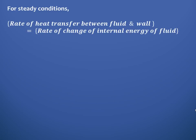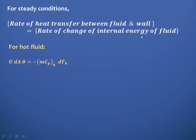For steady conditions, the rate of heat transfer between the fluids must equal the rate of change of internal energy. For the hot fluid, the heat transfer rate is given by U·dA·θ, where U is the overall heat transfer coefficient, dA is the elementary area, and θ is the temperature difference. This equals −mCp·dT_h for the hot fluid, where the negative sign indicates the hot fluid is losing heat. Therefore, dT_h = −U·dA·θ / (mCp)_h.